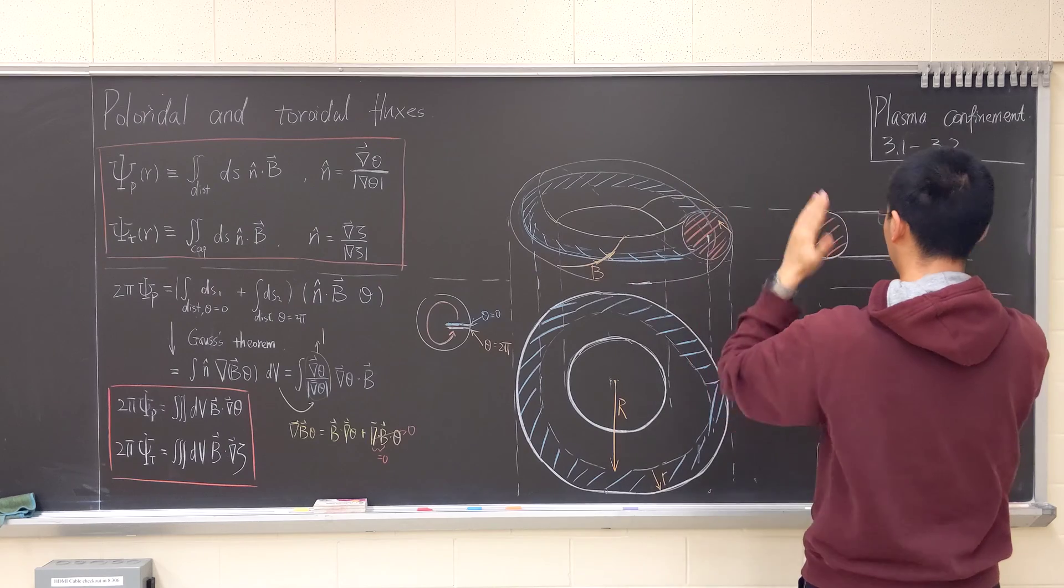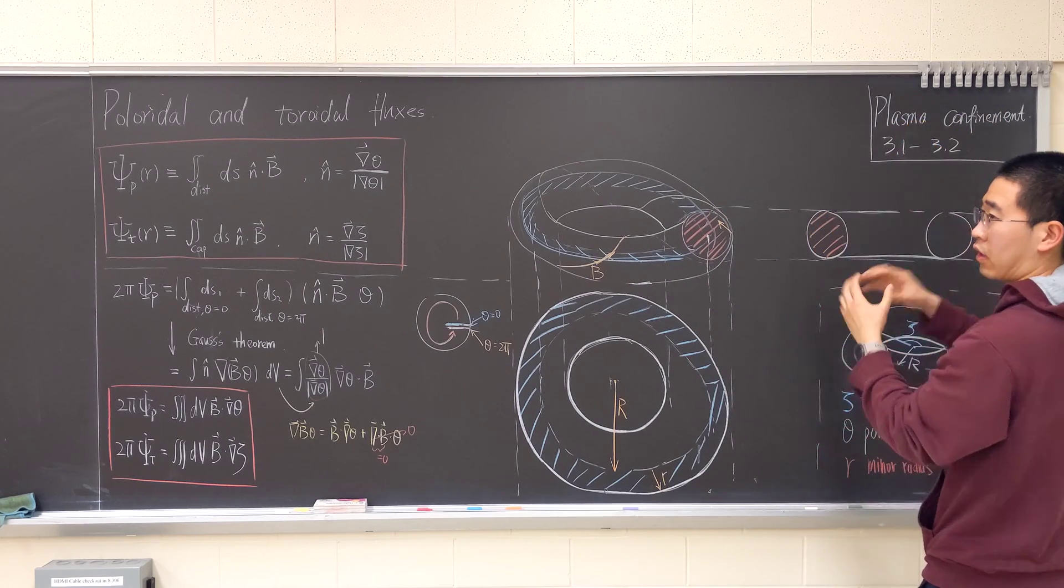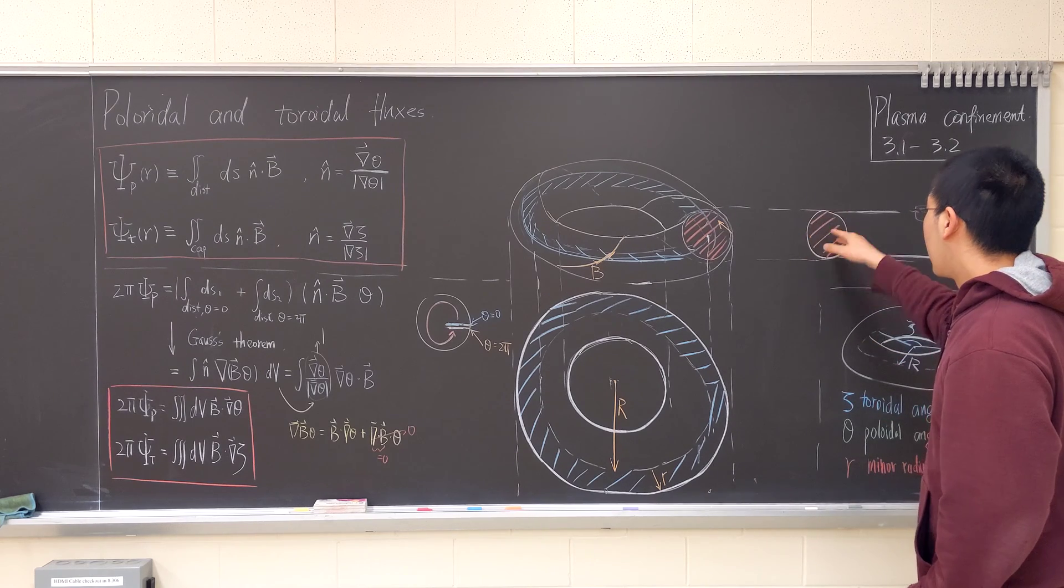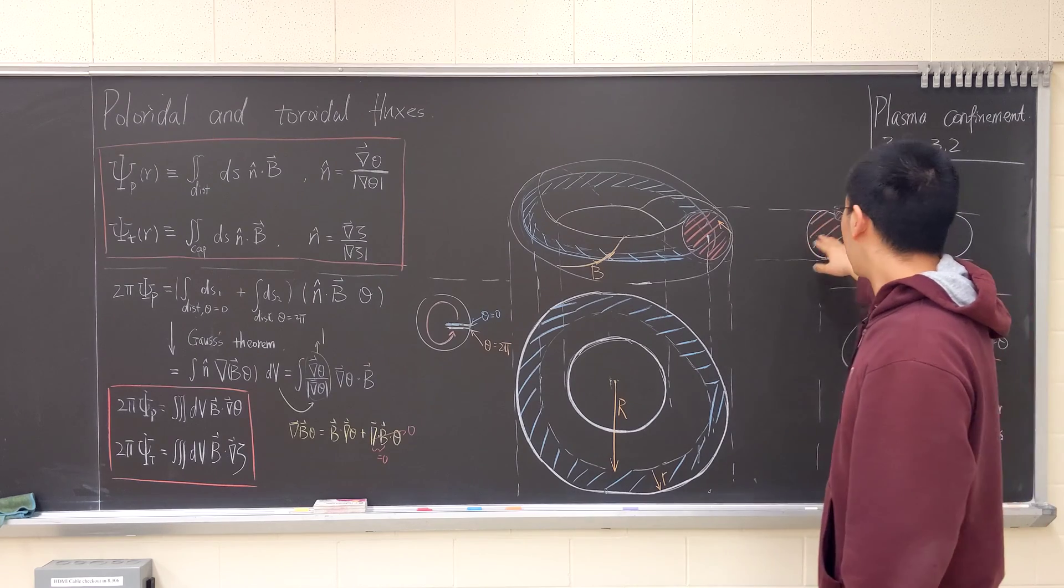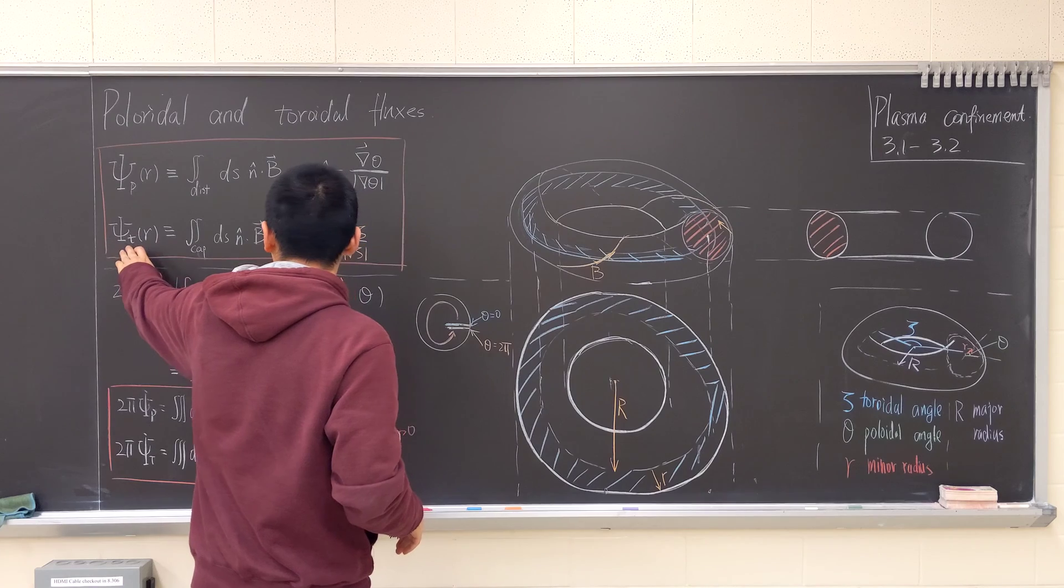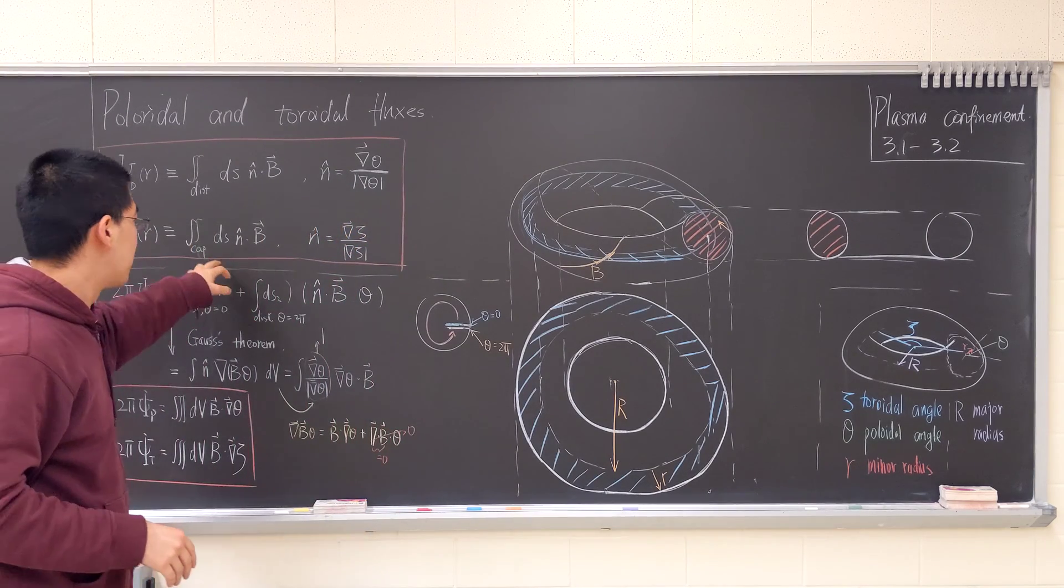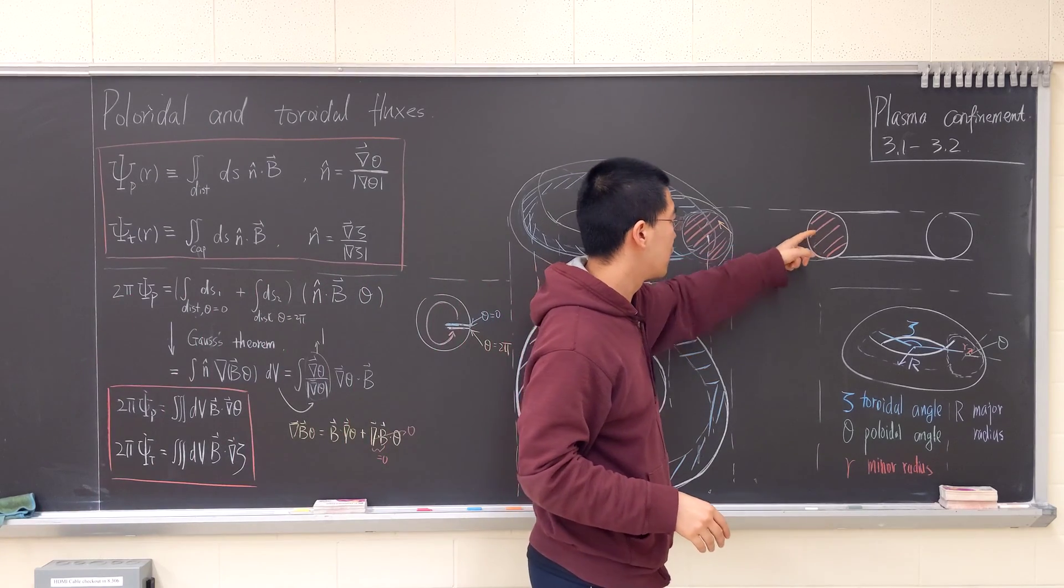This plot is looking like this way. There's a torus. You're looking this way, then you have like a cross-section of the donut. And any magnetic field goes across this. This surface is a Psi-T. And basically, it's the surface integral of the cap, which is the red section.